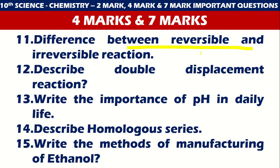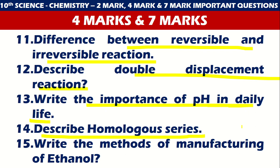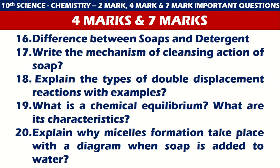Questions 11 to 15 for four and seven marks: difference between reversible and irreversible reaction, describe double displacement reaction, write the importance of pH in daily life, describe homologous series, and write the methods of manufacturing of ethanol. These are very important for four marks and five marks.